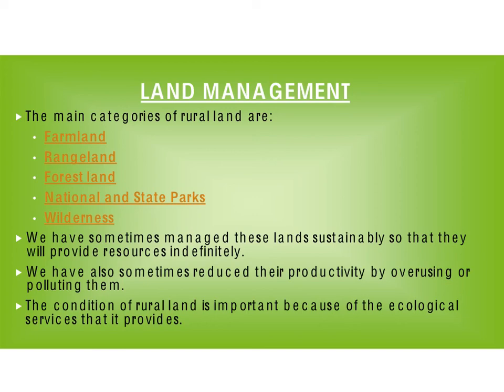If we look at rural land, there are four main categories: farmland, rangeland, forestland, national and state parks, and wilderness. Now some of these seem pretty easy to figure out just by looking at their name, like farmland and forestland. Others, like national and state parks and wilderness, you might not know the difference between. But the main thing is all five of these types of rural land are important to us. We need them to sustain us and to provide necessary resources and other ecological services. So we're going to go through each one of these categories of rural land one by one.